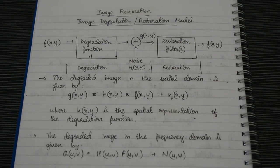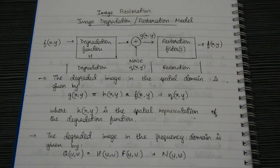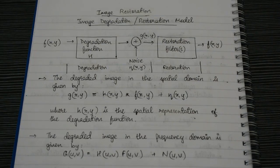Welcome to the 22nd lecture of the TTIP series. Today we're going to understand image restoration. When we studied image enhancement in previous videos, we were not aware of what kind of noise is present in the image, so we were enhancing it blindly. But in image restoration, we are already aware of the noise present, and therefore we are able to restore the image more efficiently. An example would be image blur removal.